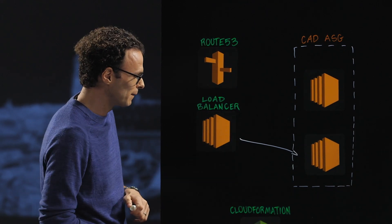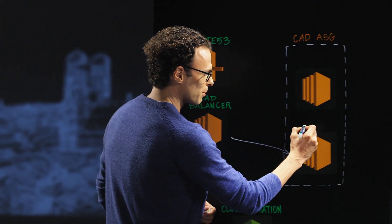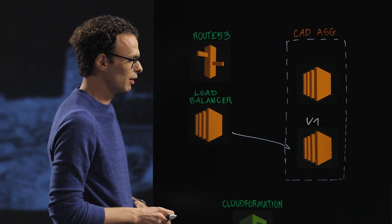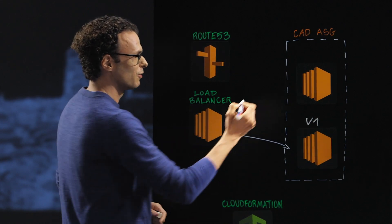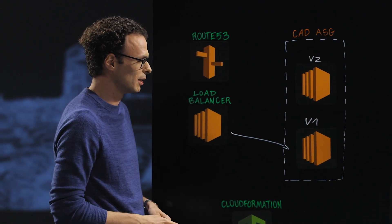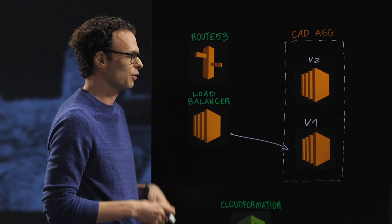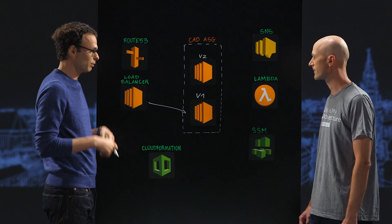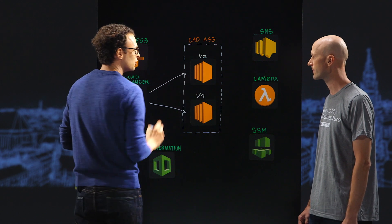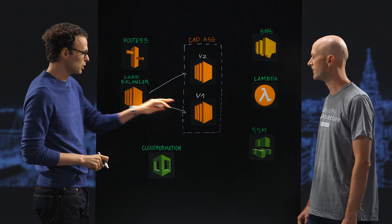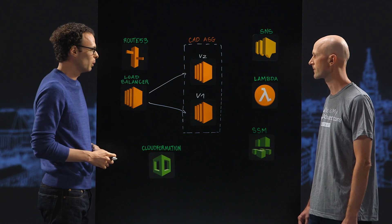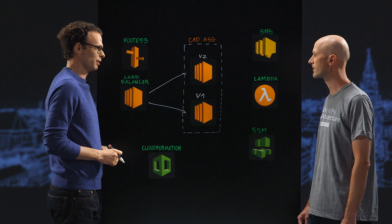Let me show you how we do that. Let's imagine we have a version one release deployed right now — all users are currently being served by the auto scaling group. Now we want to deploy version two. We'll use CloudFormation to update the launch configuration, and the auto scaling group will automatically launch new instances. We'll register those instances at the load balancer, and the load balancer will now service new traffic over there. The question is: what do we do with existing users? We don't want to cut them off — we want to keep the servers running as long as we have users on them.